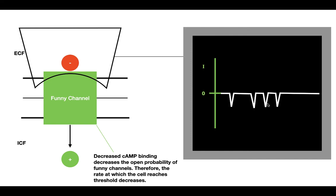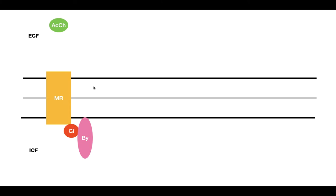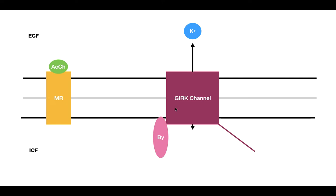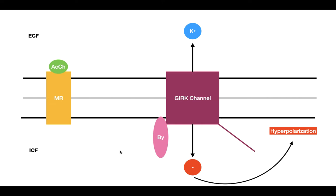Now let's look at the final way in which the parasympathetic nervous system decreases the heart rate. This final way is through the beta-gamma subunit of this G-protein coupled receptor. The parasympathetic nervous system releases acetylcholine, which binds to the receptor and activates the Gi protein. At the same time, the beta-gamma subunit also dissociates. The beta-gamma subunit interacts with a specific protein channel called the GIRK channel. When the beta-gamma subunit binds to it, it opens this channel and allows potassium to flow out of the cell. As potassium flows out, the inside of the cell becomes more negative, leading to hyperpolarization.